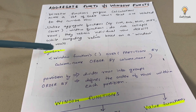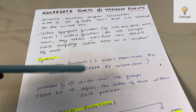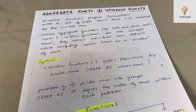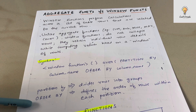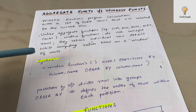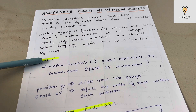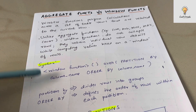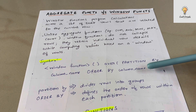The syntax is: window_function() OVER (PARTITION BY column_name ORDER BY column_name). PARTITION BY divides rows into groups, and ORDER BY defines the order of rows within each partition. So you partition the rows into different partitions and specify what order you want within each partition.